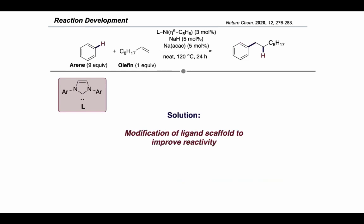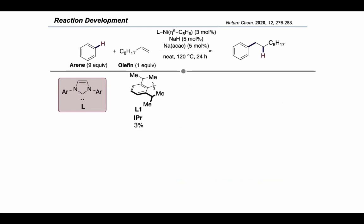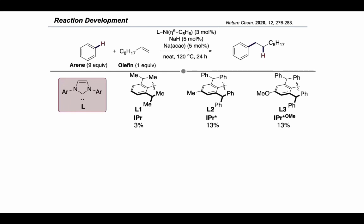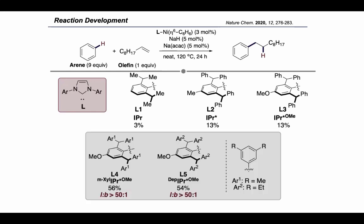We were able to improve the catalyst by modifying the NHC ligand scaffold in a variety of ways. We reacted a mixture of excess arene with a terminal olefin in the presence of an NHC-ligated nickel catalyst. When a simple commercially available NHC ligand such as IPR was used, a small amount of the hydroarylation product was formed. By modifying the sidearms of this NHC ligand with additional aromatic groups in the more sterically hindered IPR* scaffold, the yield was slightly improved. Finally, we further modified the periphery of the aromatic sidearms with 3,5-dialkyl phenyl substituents in ligand L4 (meta-xylyl-IPR*-methoxy) or ligand L5 with ethyl groups instead of methyl groups. With these two ligands, we achieved about 50% yield of the hydroarylation product with an extremely high and unprecedented linear to branched ratio of over 50 to 1.